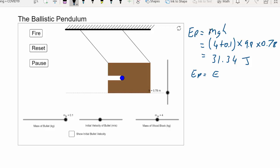And we're going to assume energy is conserved. So the gravitational potential energy is equal to the kinetic energy. And I know that 31.34 will then equal a half mass times velocity squared. If I wanted to rearrange that, I'd get 2EP divided by m square root equals velocity.